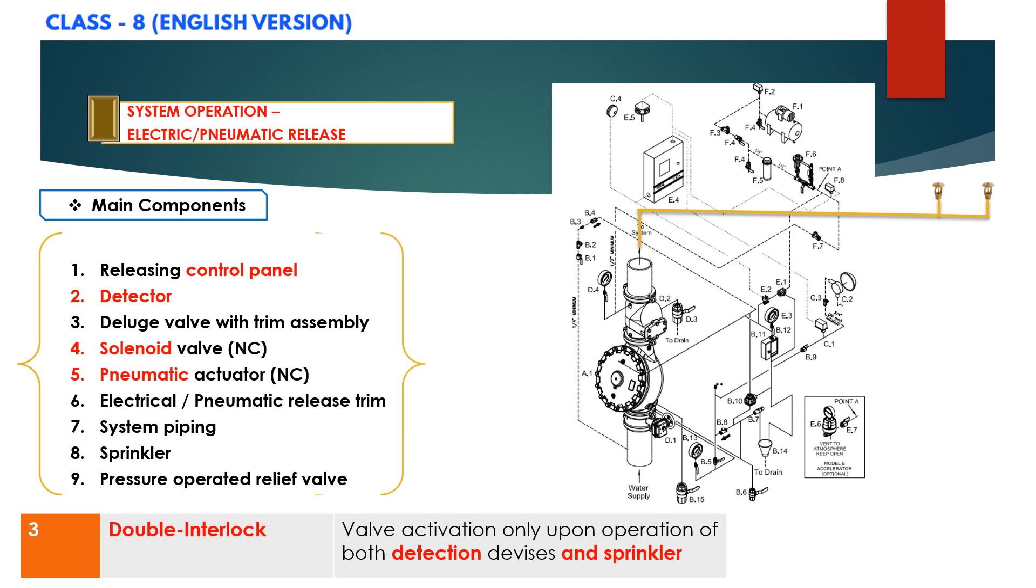As we discussed, both the detection system and sprinkler system must be activated in order to open the preaction valve and in order to flow the water into the system piping. In case if any of these systems will activate,